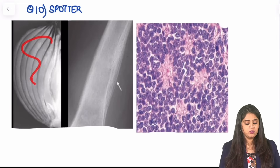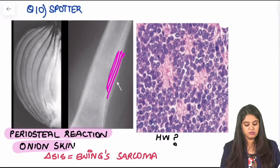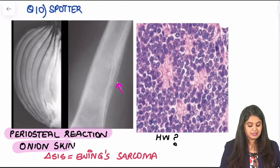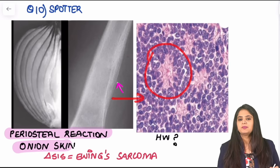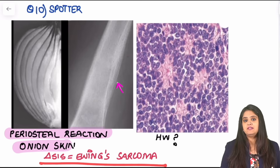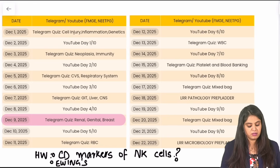The last question is from orthopedics — a spotter X-ray image. The hint is an onion peel appearance. This is the classical onion skin periosteal reaction, making it Ewing's sarcoma. Your next homework: in Ewing's sarcoma, what are the rosettes seen? We've done these rosettes in brain tumors — some mnemonic will remind you. The same rosettes are seen in Ewing's. That completes our 10 things, and you have two homeworks: CD markers of NK cells, and which rosette is seen in Ewing's sarcoma.